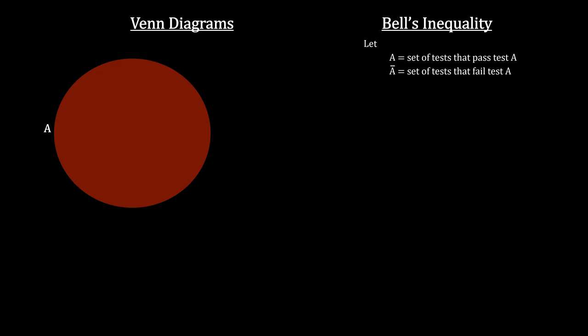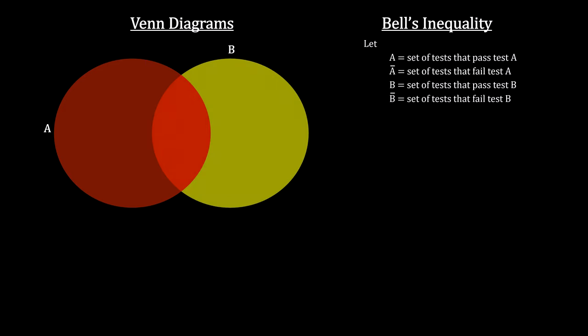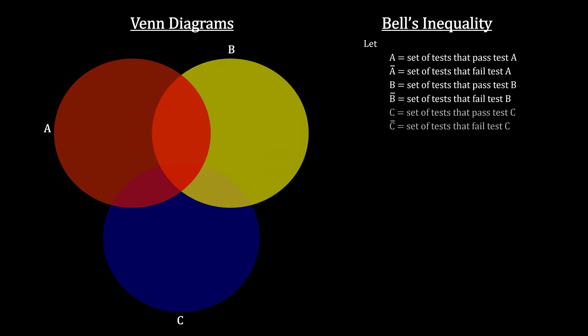Now consider the three sets. Set A of all the tests that passed test A. Set B of all the tests that passed test B. And set C of all the tests that passed test C. Notice where they overlap and where they don't.